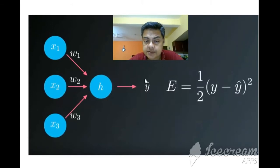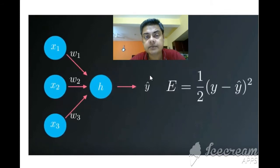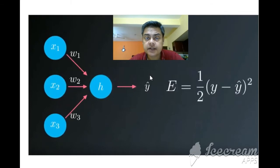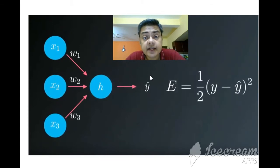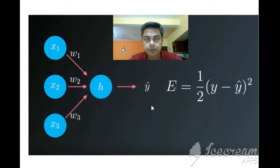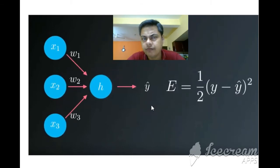That gives us y-cap, which is the prediction. Through back propagation of error, this calculation happens again and again. The error travels from the output back to the input, and that is how the error gets reduced. The method by which the error is reduced is gradient descent.